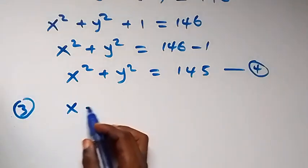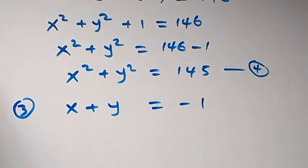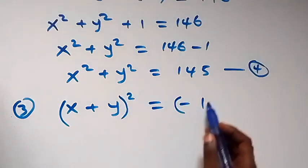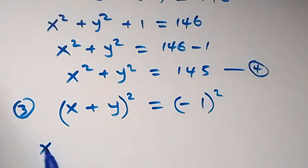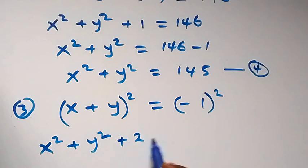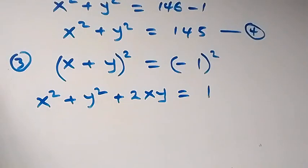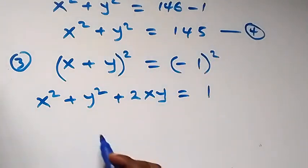From equation three, x plus y equals minus one. When we square both sides of equation three, the expansion gives us x squared plus y squared plus 2xy equals one. We substitute the value of x squared plus y squared from equation four, which is 145.